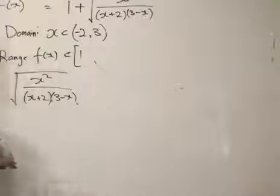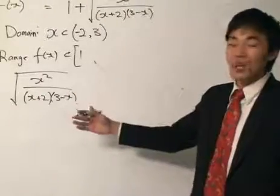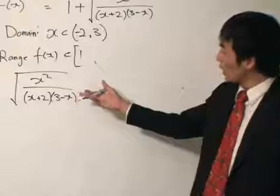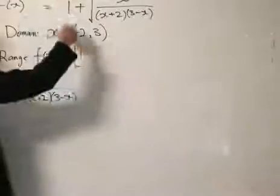So basically, we want to find what is the minimum value. Well, we already know that the minimum value is zero, and we want to find what's the maximum value, knowing that x is within the domain of here.